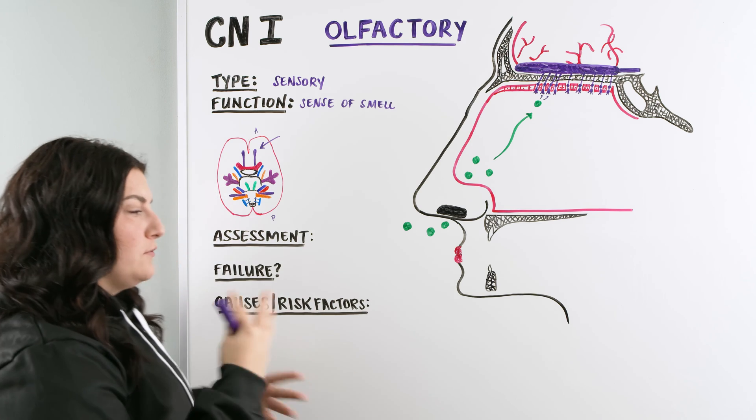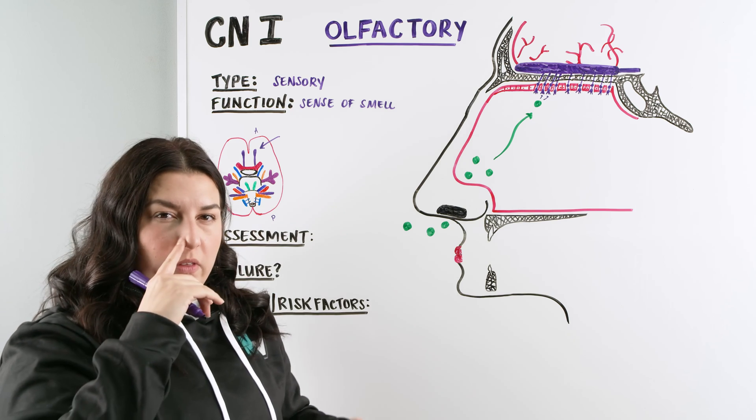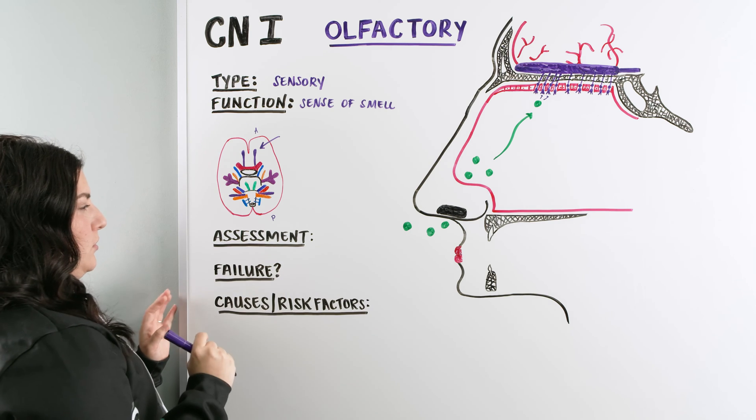If they can, great. If they have trouble, okay, there's something else maybe going on. Then you have them do the same thing on the other side. You might want to change what they're identifying in order to get a good assessment of that olfactory nerve.